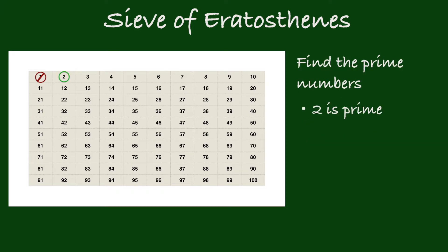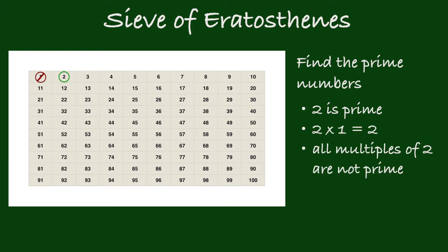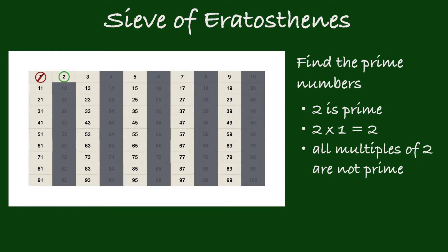2 is a prime number because 2 can only be expressed as 2 times 1, so circle it. From here on, all multiples of 2 are not prime. Take 4 for example — 4 can be expressed as 2 times 2 in addition to 4 times 1. All other even numbers can be expressed as a product of 2 and another number, so shade them out. All even numbers are not prime, except for 2.